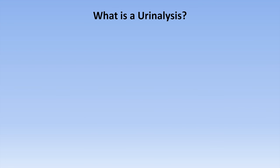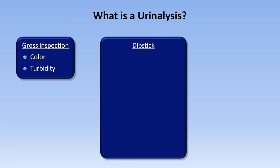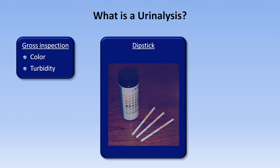Information from the UA can be divided into three distinct categories. The first is gross inspection, which includes the color of urine and its turbidity. Some might also include odor here, but this is extremely subjective and not typically reported by the lab. The second category is the so-called dipstick — a reagent strip which is literally dipped into the urine sample, triggering a series of color changes along its length which correspond to the presence and concentrations of specific molecules.